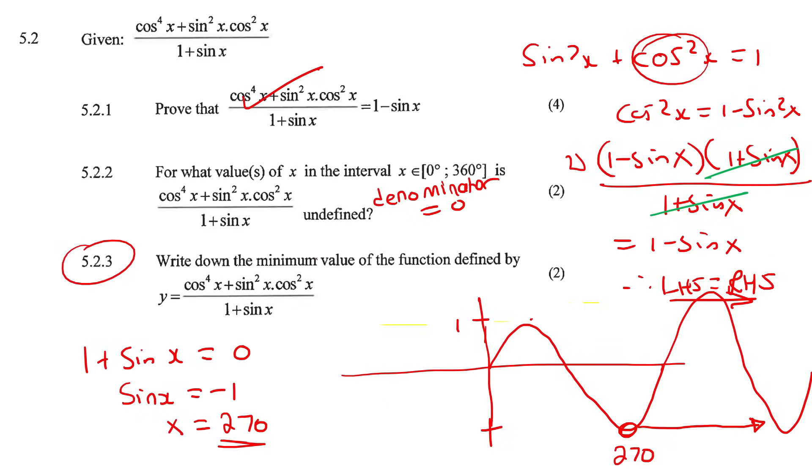This question says write down the minimum, don't use calculus. We don't use calculus in trigonometry, at least for grade 12. If you did university maths, of course you're going to use calculus with trigonometry. But here it just says write down the minimum value of this function. This is an ugly function, but we know that this ugly function is also equal to 1 minus sin x. So all we do is we rewrite it as that, and then we just analyze the question from that perspective.